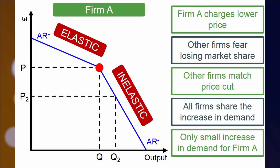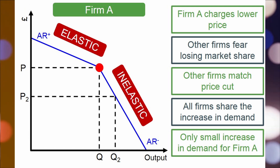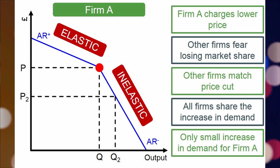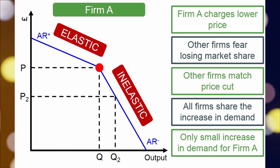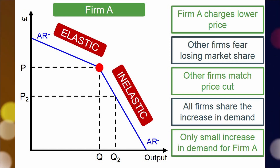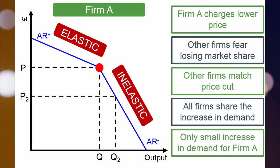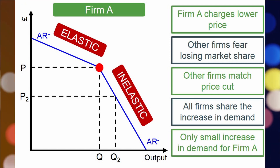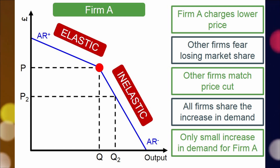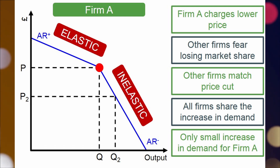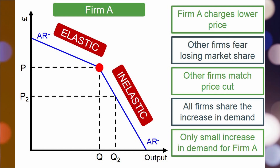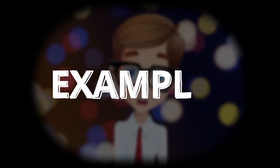On the downward sloping portion of the curve, any price increase will lead to a decrease in demand, which will affect the firm's profits. However, on the upward sloping portion of the curve, any decrease in price will lead to an increase in demand, but not necessarily an increase in profits. This is because other firms may respond by lowering their prices as well, and therefore profit gained from increasing demand will be offset by a decrease in price.